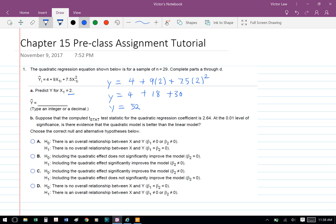Part b: Suppose that the computed t statistic for the quadratic regression coefficient is 2.64 at the 0.01 level of significance. Is there evidence that the quadratic model is better than the linear model? In here our H₀ is that the quadratic effect does not significantly improve the model. Our alternate hypothesis is that the quadratic effect significantly improves the model, so we have β₂ does not equal 0.